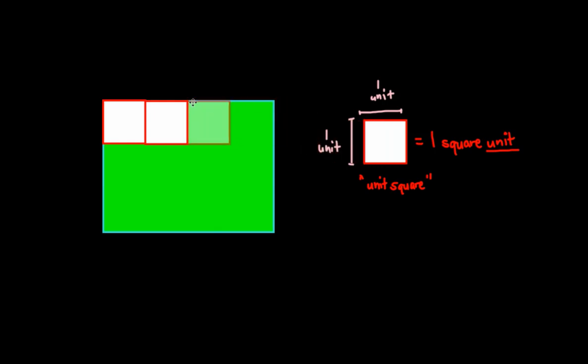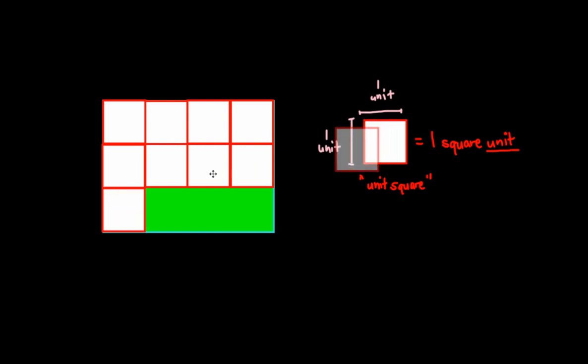So, I'm placing down 3 unit squares, 4 unit squares, 5 unit squares, 6 unit squares, 7 unit squares, 8 unit squares. As I place these unit squares, as I tile them over, you can think of this as like tiling, as I tile them over the shape here, I'm actually finding the area.